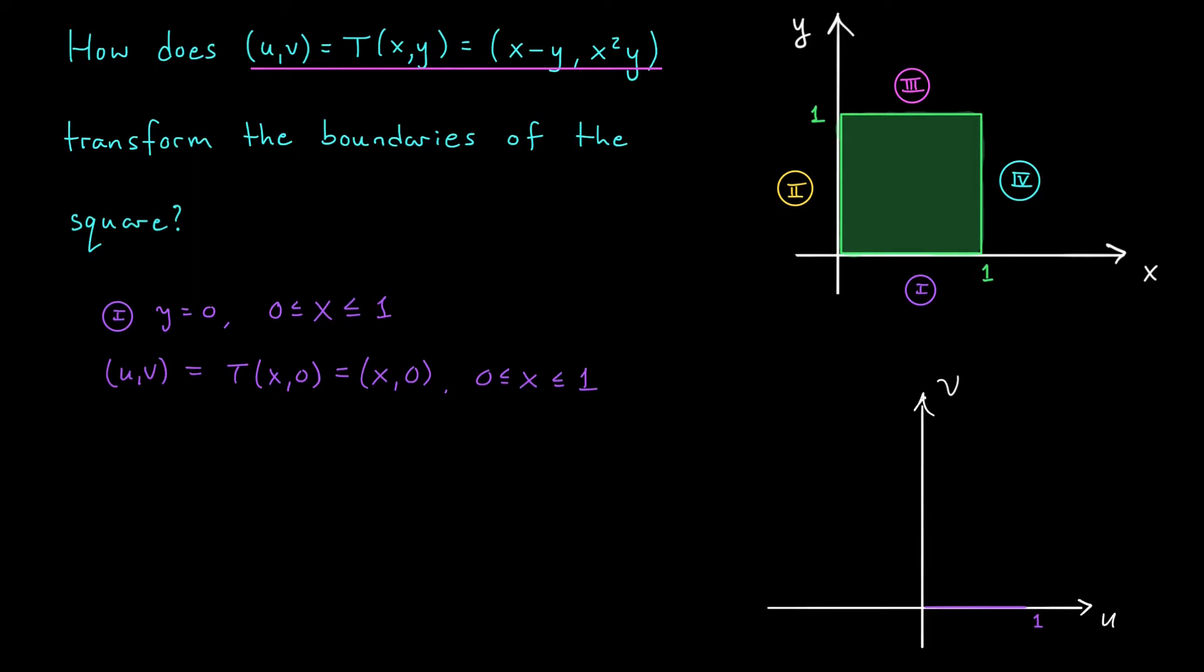All right, we're going to use the same kind of approach for the second boundary component. Since we're working along the y-axis, our x value is 0, and y is allowed to range between 0 and 1. What does T do to this line segment? Well, it gives us points uv = T(0,y), and those points have the form (-y, 0). Now, it's tempting to get confused here, but don't do it.